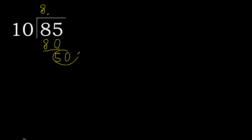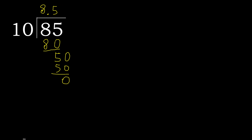50. 10 multiplied by 5 is 50. Subtract: 0. Therefore finished. 85 divided by 10 is 8.5.